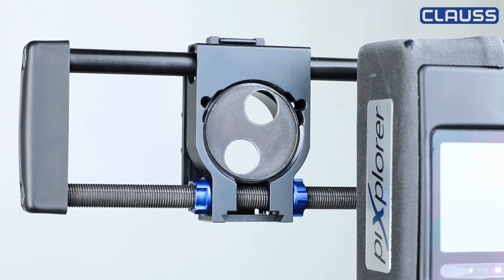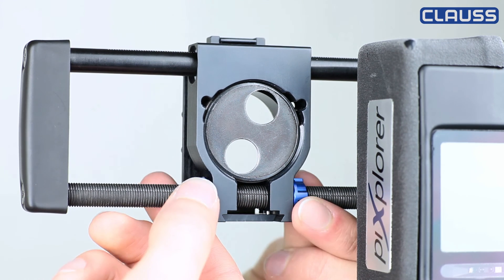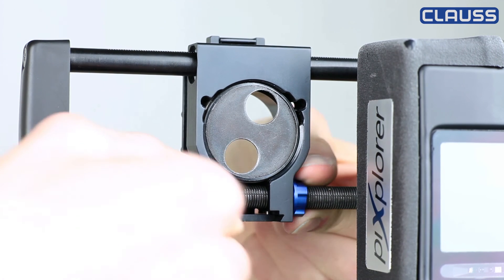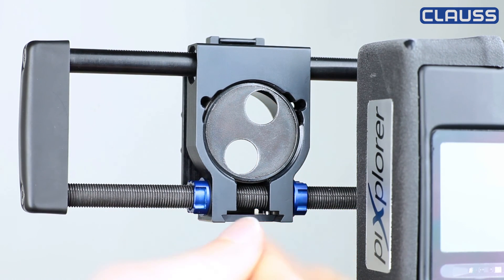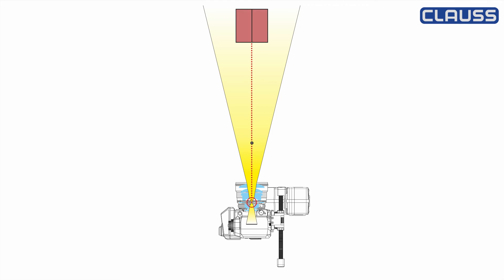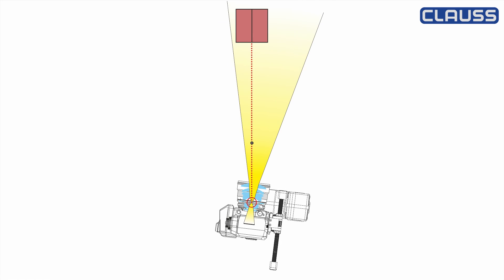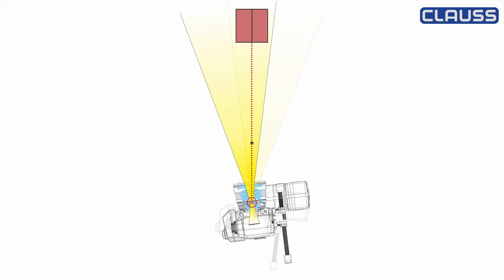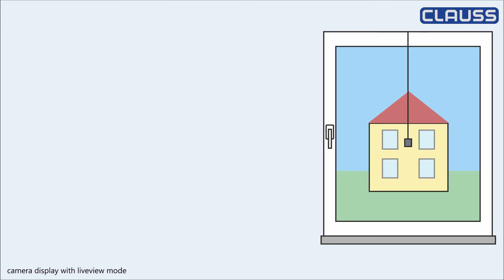To change the depth, you have to loosen these two knurled screws. You should make these changes to the depth until both objects are always on top of each other, no matter how the pixblower moves your camera. After that, fix the found value with the knurled screws.